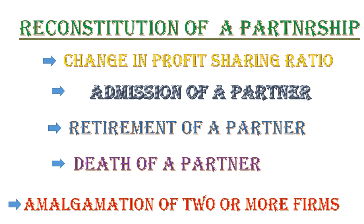Admission of a partner means whenever the partnership firm needs more money or the help of another person, they will admit a new partner. At the time of admission, the new partner has to bring two amounts: one is capital and another is premium for goodwill. Premium for goodwill is the compensation given to the existing partners because they had built up goodwill for the business firm — that is actually the share of goodwill.